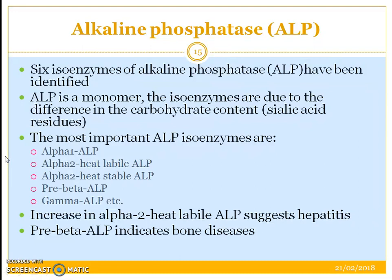Alkaline phosphatase has 6 isoenzymes which have been identified. It is a monomer, and the isoenzymes are due to differences in carbohydrate content — specifically sialic acid residues. The different types include alpha-1 ALP, alpha-2 heat labile ALP (easily degraded), alpha-2 heat stable ALP (stable at higher temperatures), pre-beta ALP, and gamma ALP. Increase in alpha-2 heat labile ALP suggests hepatitis or inflammation of the liver, whereas pre-beta ALP indicates bone diseases.